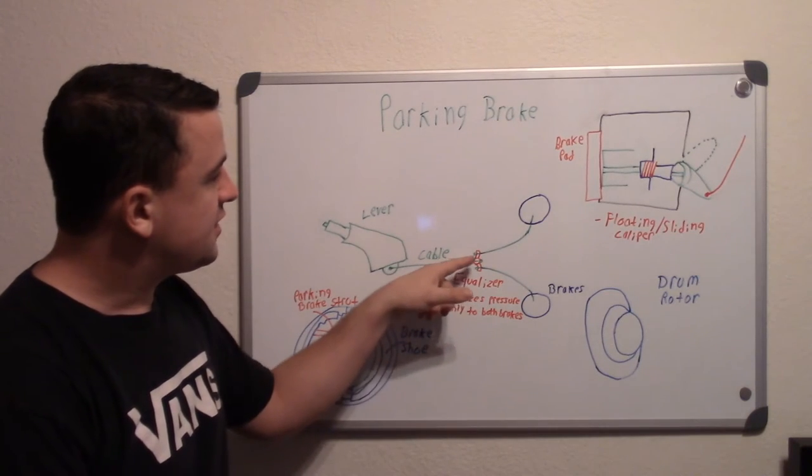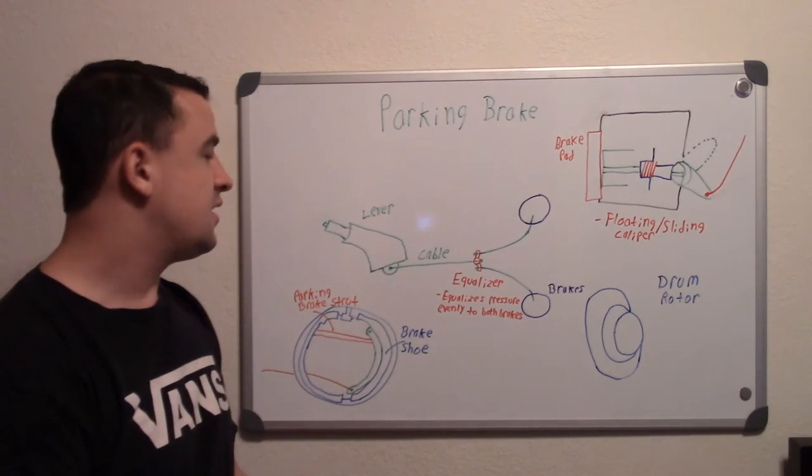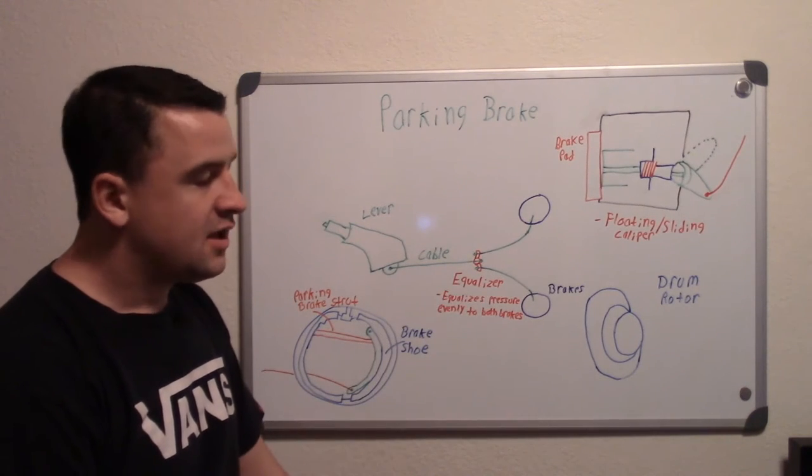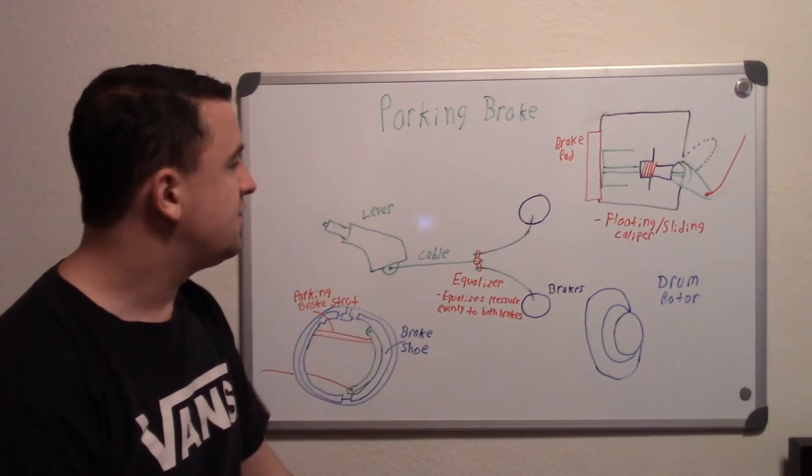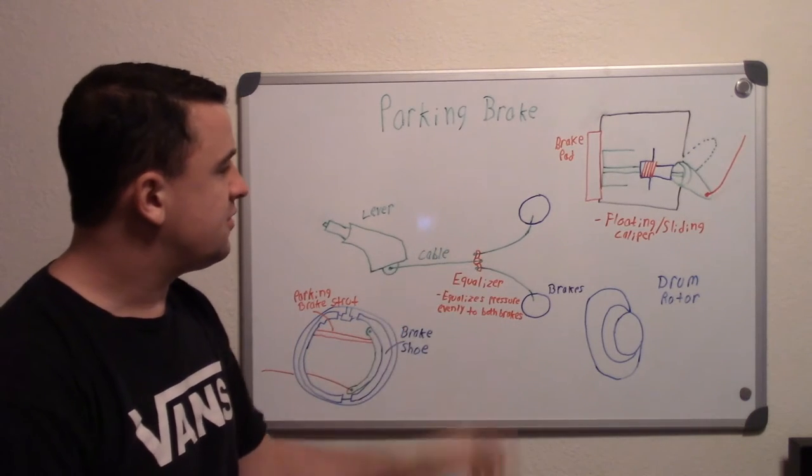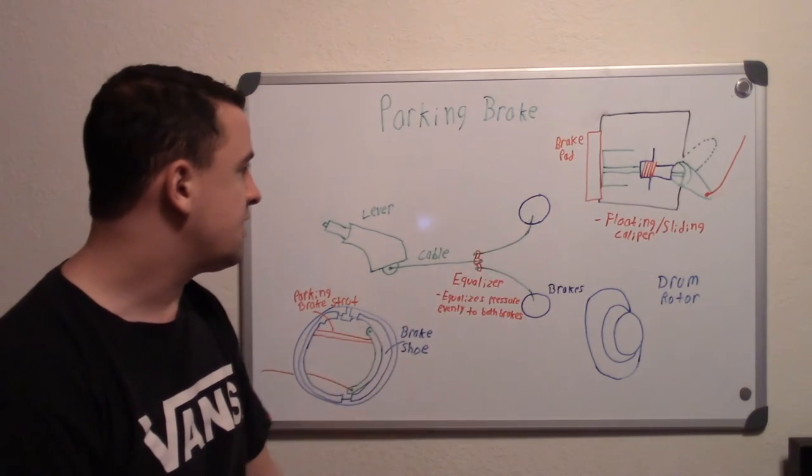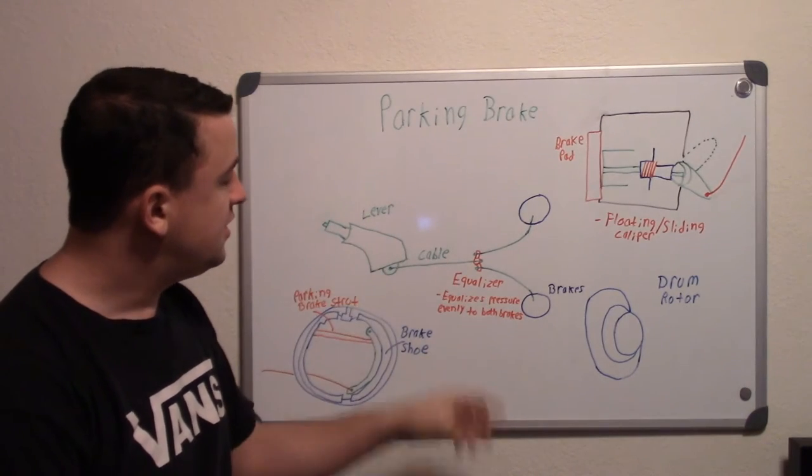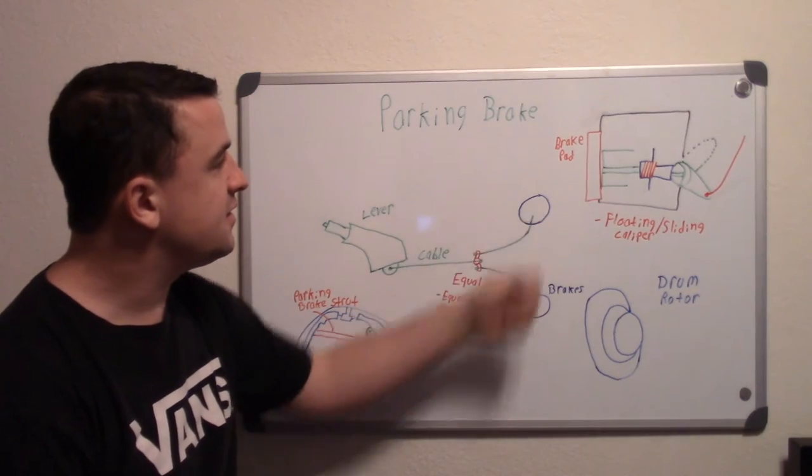The equalizer connects to other parking brake cables that go to each brake. The equalizer equalizes the pressure evenly to both brakes so you don't get more force on one brake than another. These cables have screws at the end so you can adjust them. You always want to make sure those are adjusted evenly because you don't want uneven pressure. Basically, you pull a cable that connects to your lever, and it separates into two cables that go to each brake and mechanically engages those brakes.